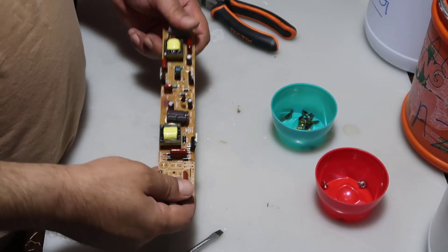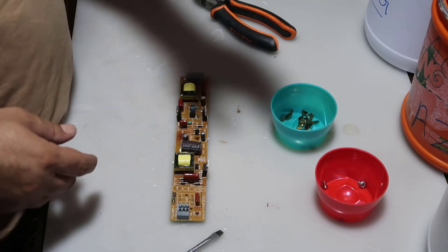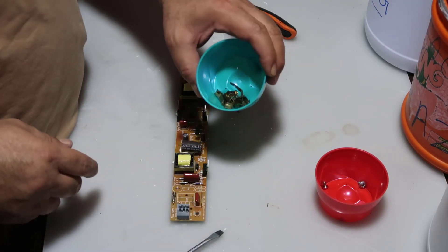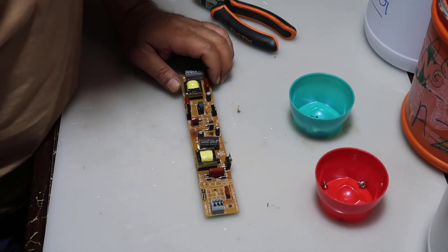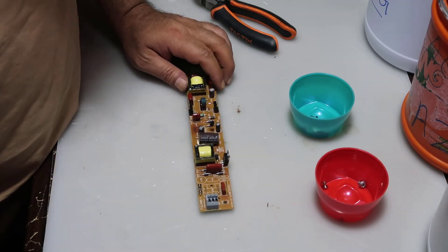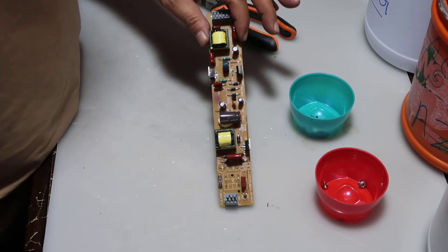And that's all, that's how, and we got brass also. So, that's how you scrap an old lamp, a fluorescent lamp, and its ballast.